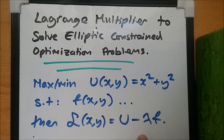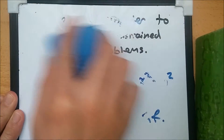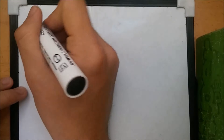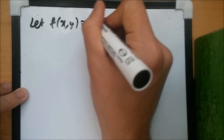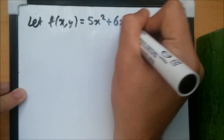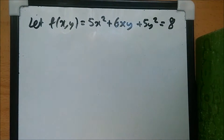We'll calculate partial derivatives and hence find the coordinates for x and y. Let's start with a worked example. Suppose we let f(x, y) be defined by the elliptic expression 5x squared plus 6xy plus 5y squared equals 8.